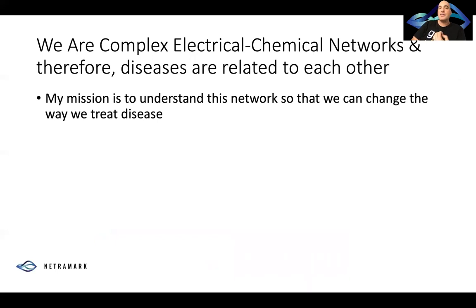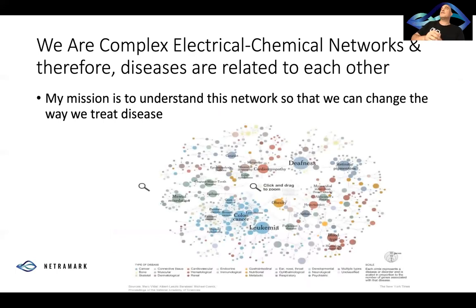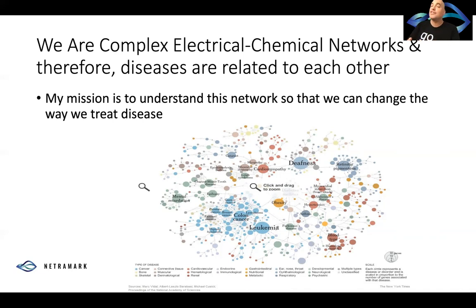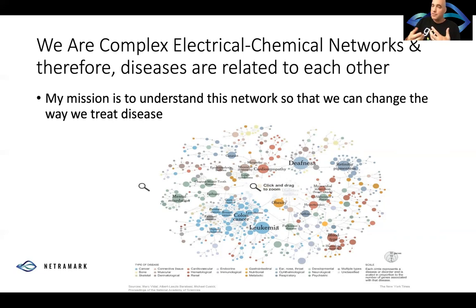We are complex electrical-chemical networks, and therefore diseases are related to each other. One of the things we do in our company is starting to understand from a graph theory perspective how different diseases literally relate to each other. What a doctor may call Alzheimer's now, in a few years we're going to have different names for these things — there are different etiologies, different mechanisms. Quantum computation is going to be very important for this, but we'll get there.